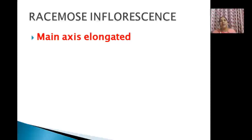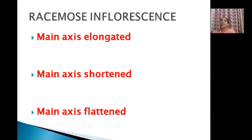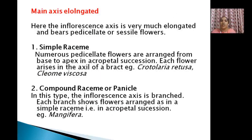A simple example of racemose inflorescence is Crotalaria. Under racemose inflorescence, there are different classes based on axis arrangement — three categories: main axis elongated, main axis shortened, and main axis flattened. Now let us look at what different cases come under the first category — main axis elongated.